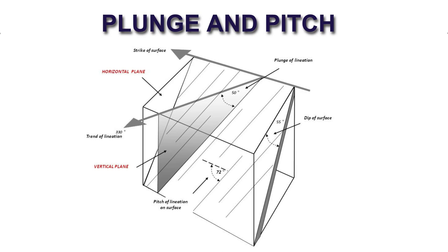Pitch and plunge are measured for a linear feature. To describe a planar feature — like a bed, a fault plane, a limb of a fold, an axial plane, a foliation, or a cleavage plane — we use dip and strike. In the same way, if you want to describe a linear feature like a mineral lineation or a slickenside on a fault plane,